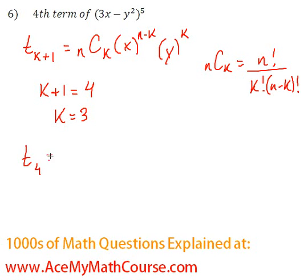So we're looking for term 4. And we have 5 choose 3 because our n is 5 and our k is 3. Times the first term, which is 3x to the power of n minus k. Times the second term, which is negative y squared to the power of k.